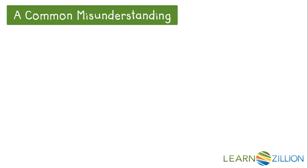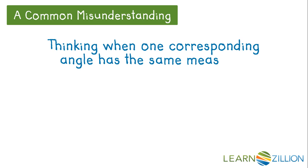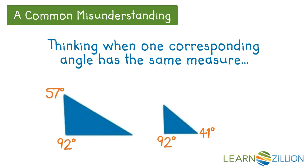A common misunderstanding is thinking that when one corresponding angle has the same measure, then the triangles are similar. In this case, these two triangles have the same measure of 92 degrees, but are they similar?